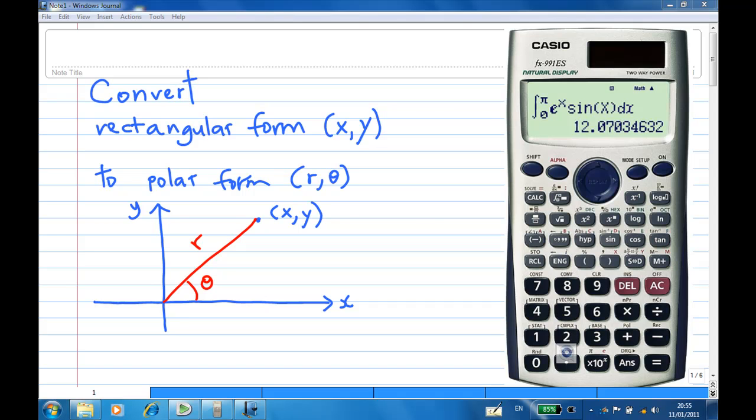Hi, for this recording, I'm going to show you how to use a calculator to convert rectangular form coordinates to polar form. We know that any point on the plane has a coordinate (x,y), we usually call this the rectangular form. Now, we can also specify the location of a point by using the polar form (r,θ), where r is the distance from the point to the origin, and θ is the angle measured from the positive x-axis.